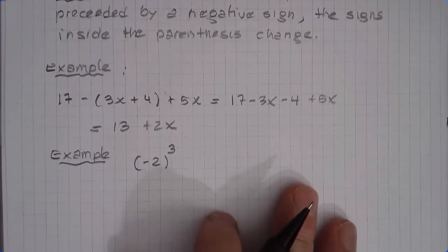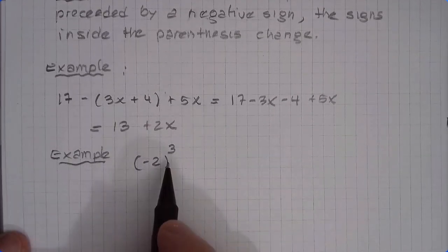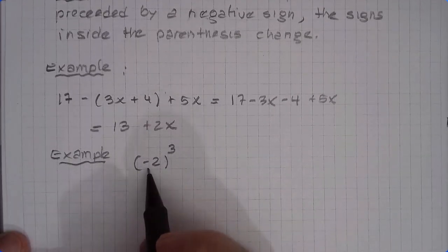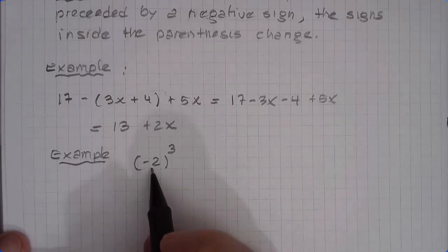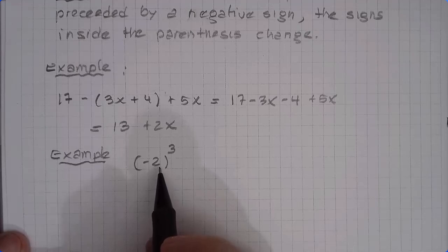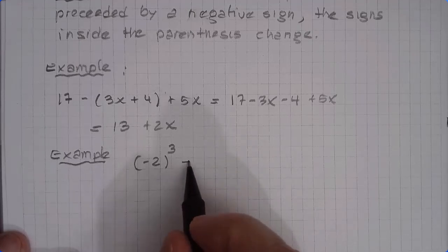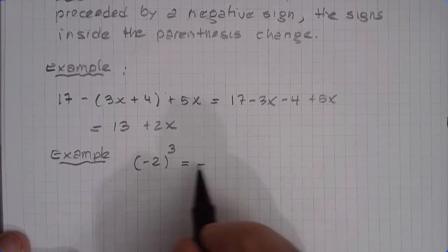Another example. Let's say that we have negative 2 to the third. Negative 2 to the third means negative 2 times negative 2 times negative 2. So how many negatives do we have? 3. Which is odd. So the result is going to be negative. Negative 8.